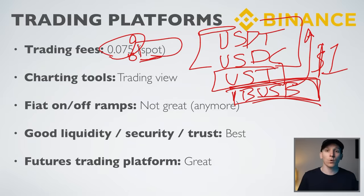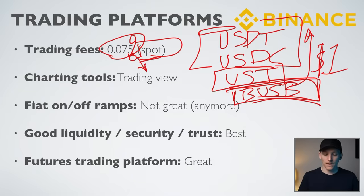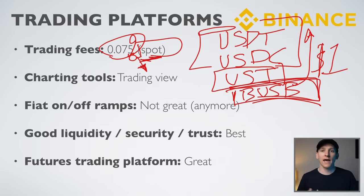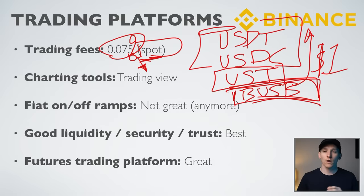The spot market trading fees are around 0.075%. If you want to day trade, you might use futures, which are actually a little cheaper — many people use futures to day trade because of lower fees. If you're an absolute beginner I'd suggest staying in the spot market for now, as futures carry higher risk. I'll link futures trading tutorials in the description. Binance's 0.075% fee is very, very low.